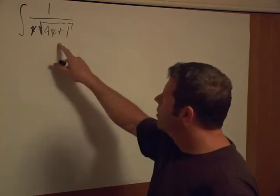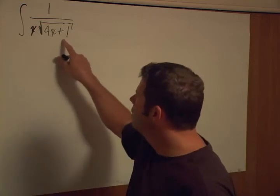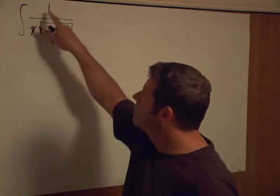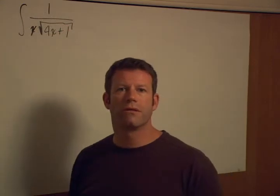So the simple things we would want to use, like letting u equal this, don't really help us because we have an x here. We don't have the right components in the numerator to go along with the du term.